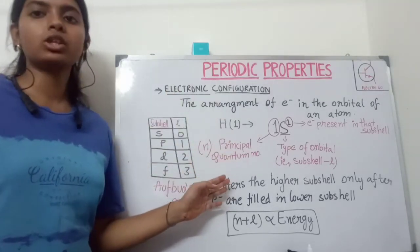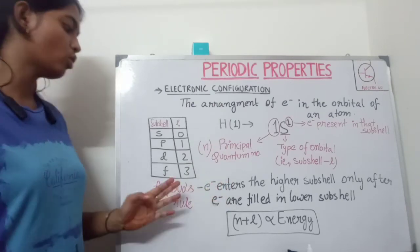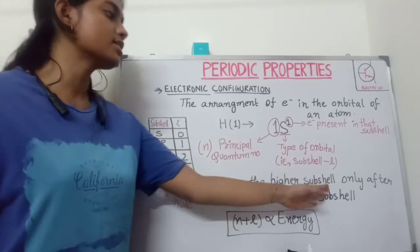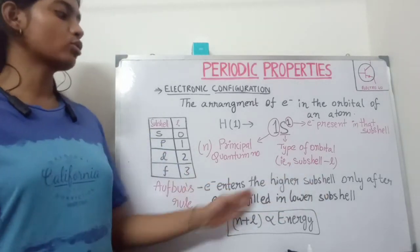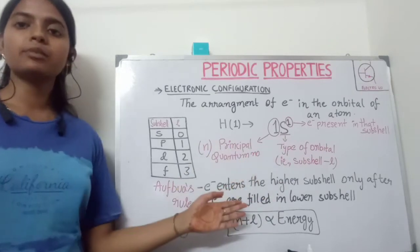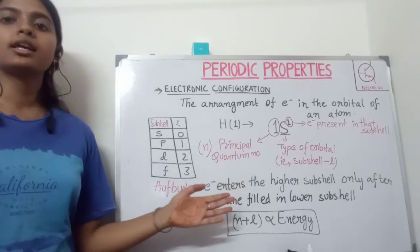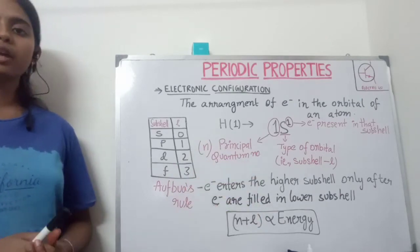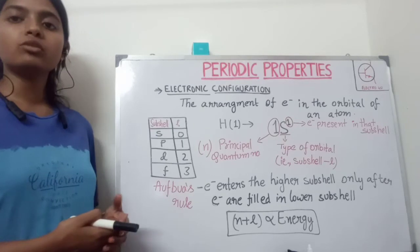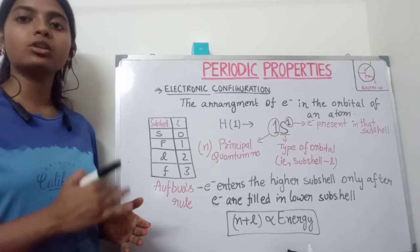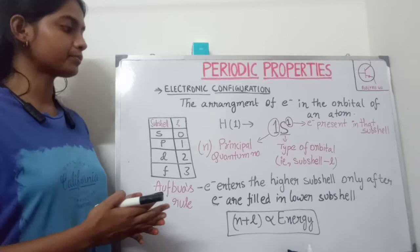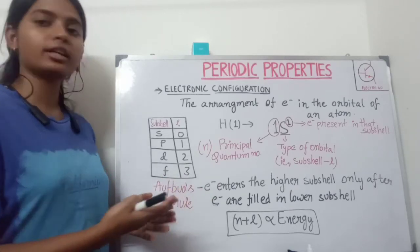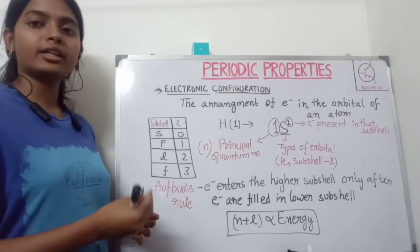The arrangement of electrons in the orbitals is done according to the Aufbau rule. The Aufbau rule says that an electron enters a higher subshell only after electrons are filled in the lower subshell. Here, higher and lower subshell means the subshell having higher and lower energy. So according to this rule, an electron will enter first in the subshell having lower energy, and then after that it will enter the higher energy subshell.